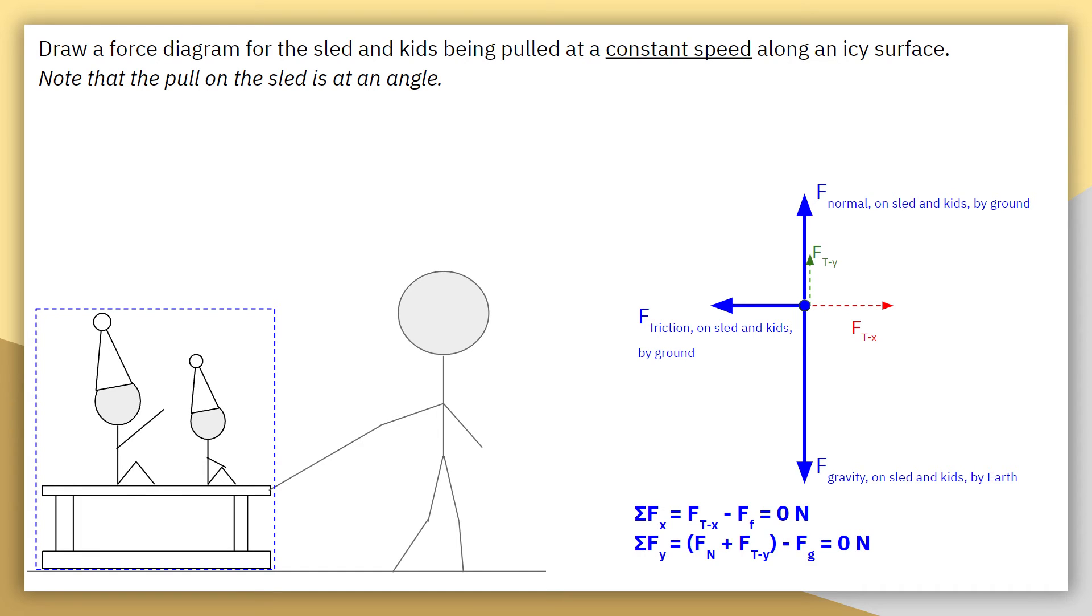Vertically, we're also assuming zero acceleration. So we're saying that overall, the sum of all of the forces on the y-axis should be zero newtons. We have two forces upwards, so we combine them. Force normal, plus force Ty, that vertical component of tension. And then we subtract the single downward force, which is the force gravity.